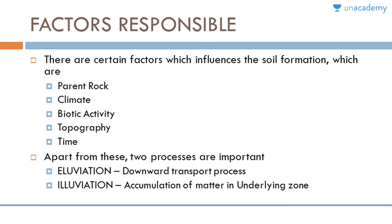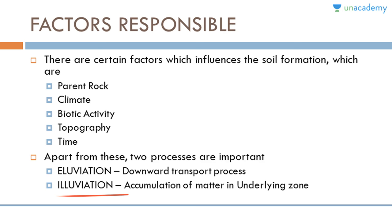Soil formation at any place is affected by certain factors which determine the rate of soil formation: parent rock, climate, biotic activity, topography, and time. Apart from these, there are two more important processes in soil formation — eluviation, where materials from the upper layer of the soil are transported downward, and illuviation, where those transported materials are deposited and accumulated in the lower layers.